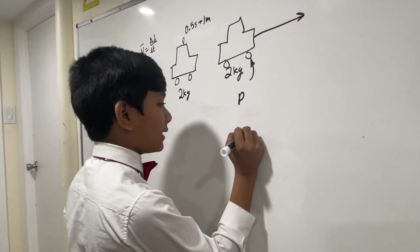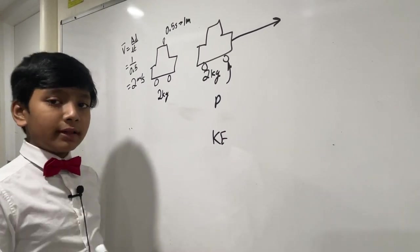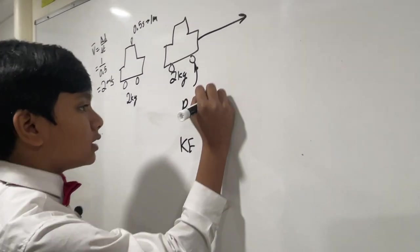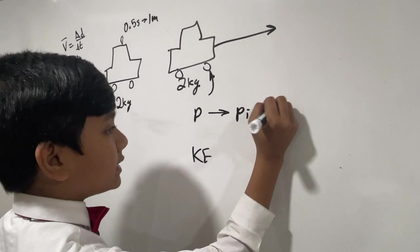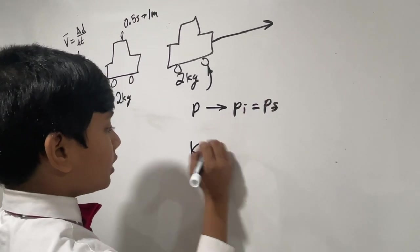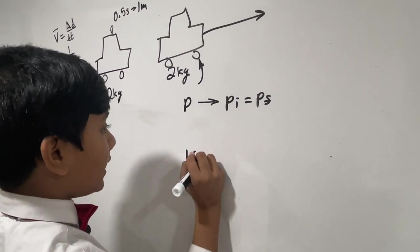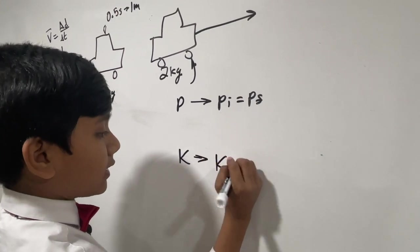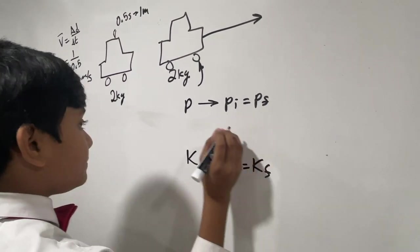Now, momentum and kinetic energy are conserved with these funky little equations. Number 1, PI is equal to PF. And number 2, KE or just KI is equal to KF.